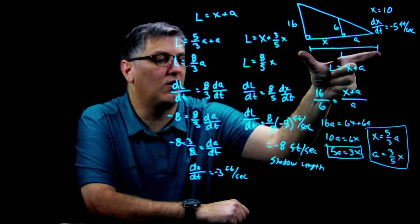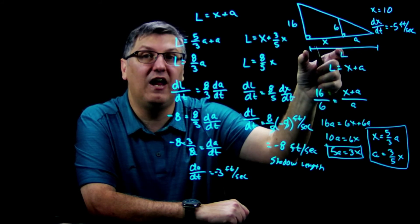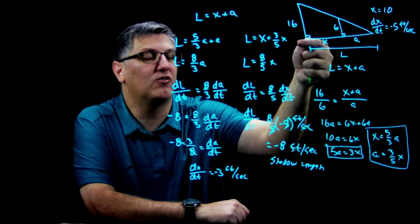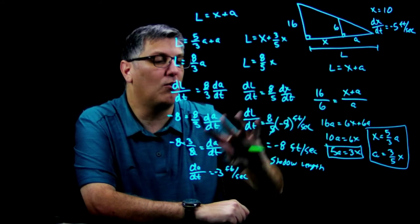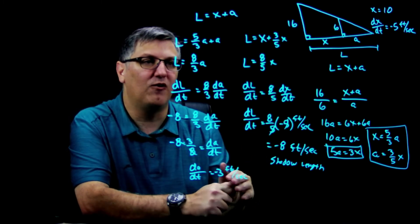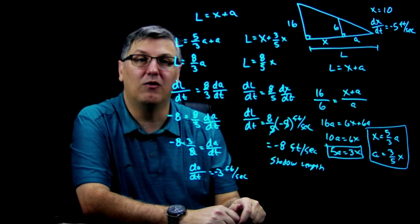So it's coming in three feet per second while the shadow is decreasing at eight feet per second as the guy's walking at five feet per second towards the lamppost. That's what all this information tells you. These similar triangles, they are just different beasts when it comes to these related rate problems.